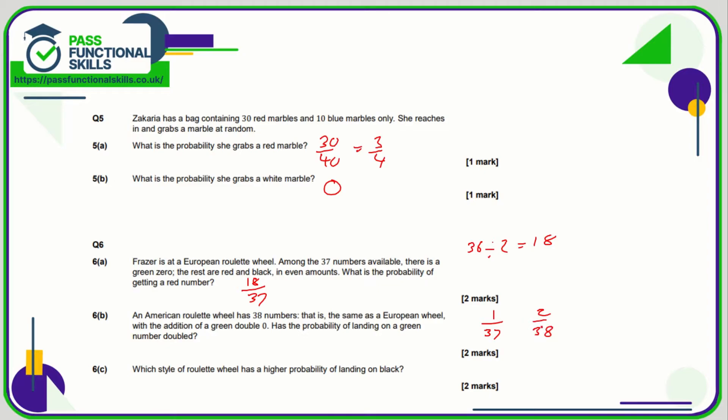And 2 out of 38 is not double 1 out of 37. Double 1 out of 37 is 2 out of 37, not 2 out of 38. So no, it has not doubled.